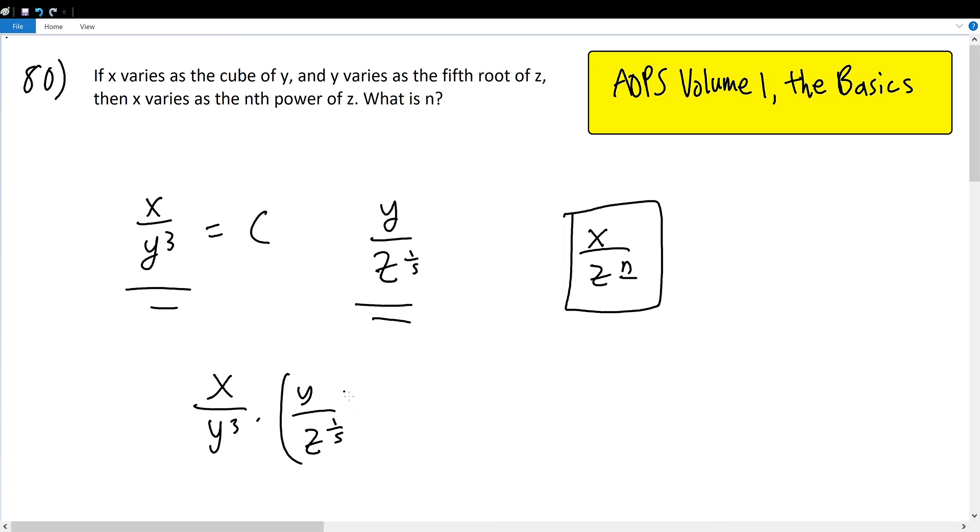Well, we can raise both sides of this fraction by the third power, because then y to the third power can cancel with y to the third power in this denominator. Therefore, this becomes x over y to the third power times y to the third power over z raised to the three over fifth power.